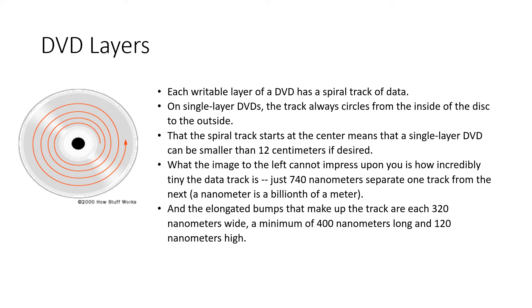Each writable layer of a DVD has a spiral track of data. On single layer DVDs, the track always circles from the inside of the disc to the outside. The data track is incredibly tiny — just 740 nanometers separate one track from another. A nanometer is one billionth of a meter. The elongated bumps that make up the track are each 320 nanometers wide, a minimum of 400 nanometers long, and 120 nanometers in height.